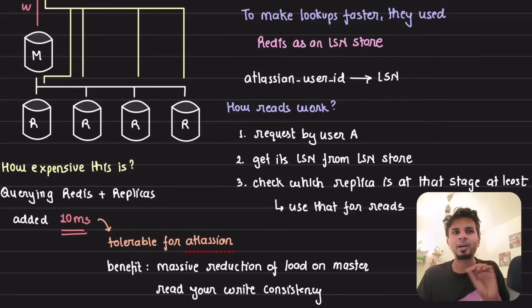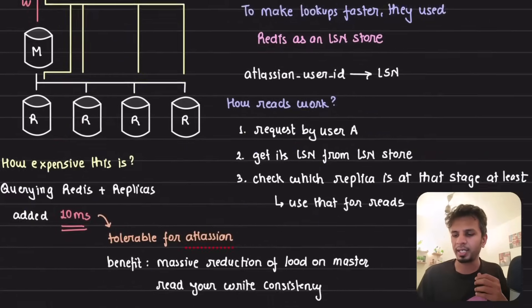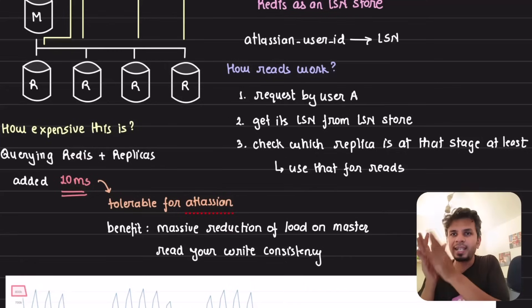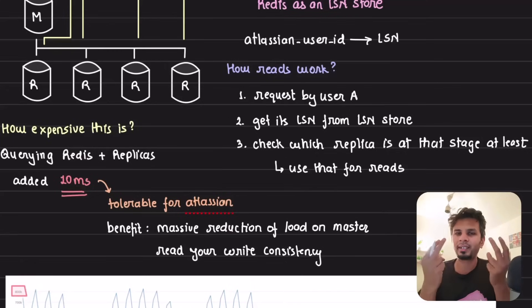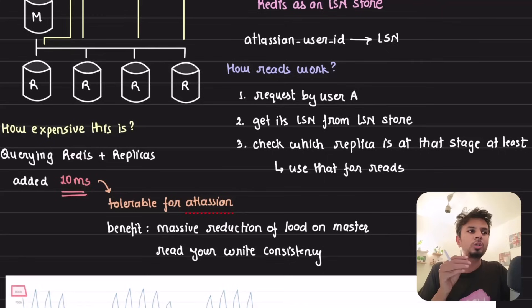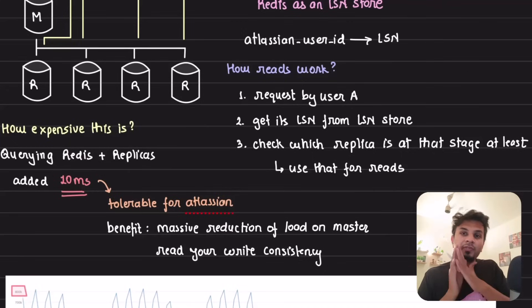When reads happen, in the Django middleware the first thing it does is get the LSN from the LSN store (Redis) for that user. It then checks which replicas have at least that LSN number — since LSN is monotonically increasing you can directly compare. It picks one replica for that request. The read request goes to replica while the write request goes to master, minimizing unnecessary load on master and leveraging replicas effectively.